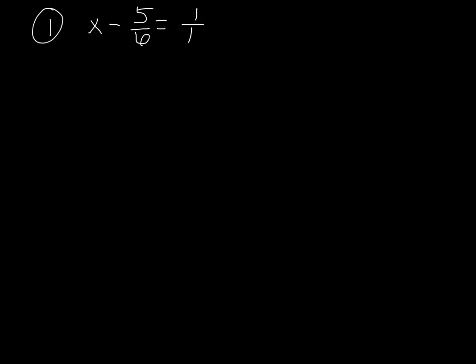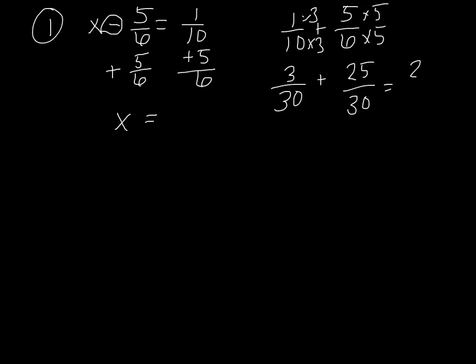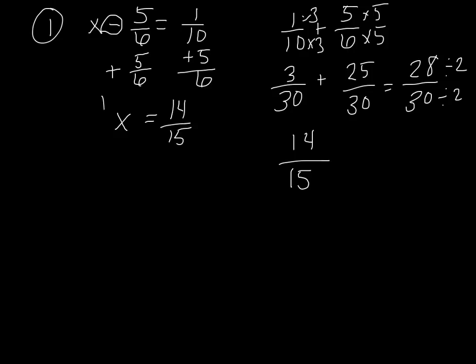The first problem says x minus 5 sixths equals 1 tenth. I have to do the opposite sign, so I'm going to add 5 sixths to both sides. I'm left with x equals on this side. Now I have to do 1 tenth plus 5 sixths. I need to get a common denominator — I'm looking at 30. I multiply by 3 to get 3 thirtieths, then multiply by 5 to get 25 thirtieths. Total I'd get 28 thirtieths. Now I can reduce that by 2, giving me 14 fifteenths. So 14 fifteenths is what x equals.